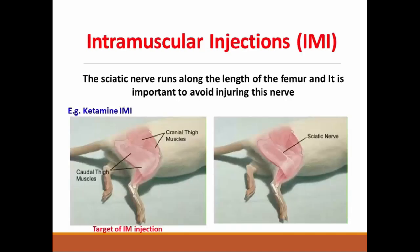Intramuscular injection. The most important point in this route is to avoid injury of the sciatic nerve, which runs along the length of the femur.